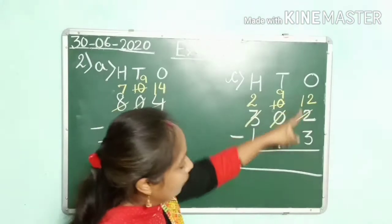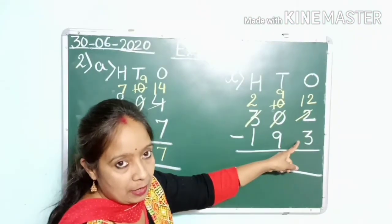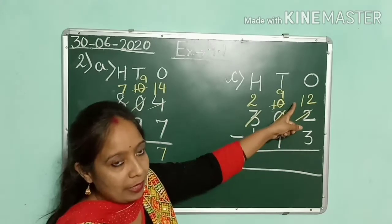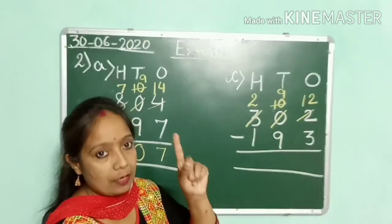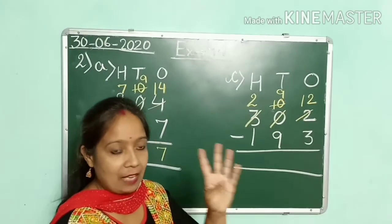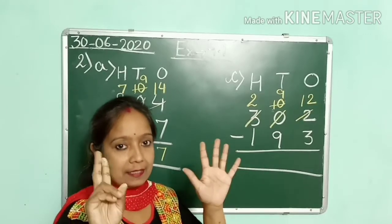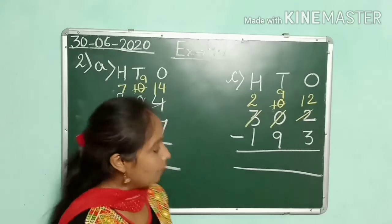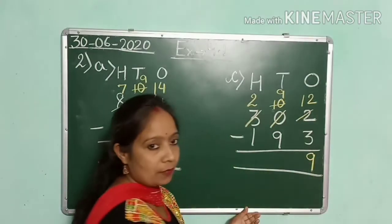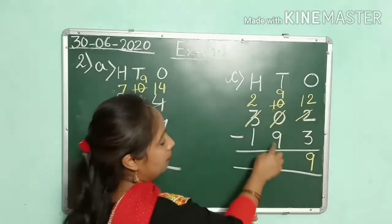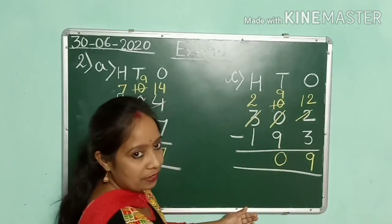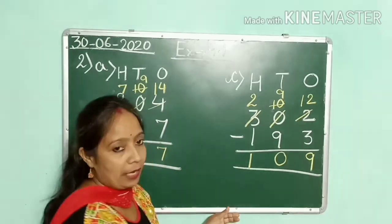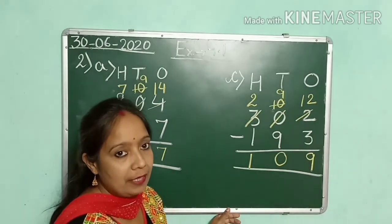Now we have to subtract 12 minus 3. After 3, start counting till 12 — 4, 5, 6, 7, 8, 9, 10, 11, 12. How many fingers? 9. So you write here 9. Now 9 minus 9 — again 0. And 2 minus 1 is 1. So our answer is 109.